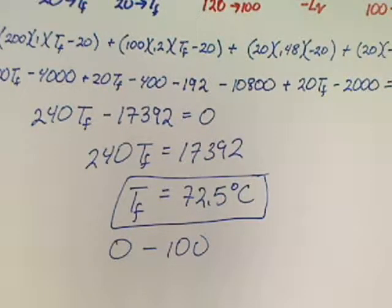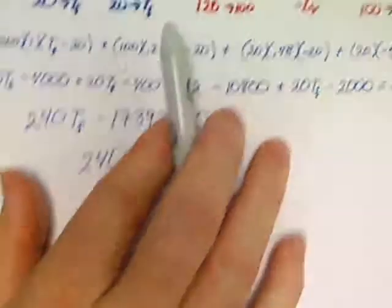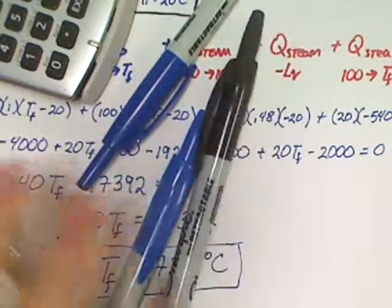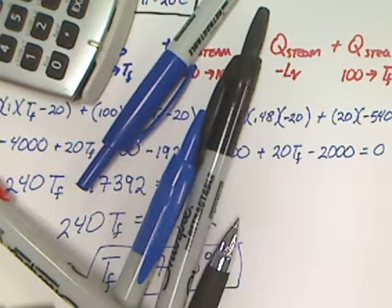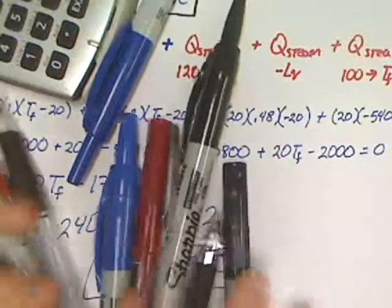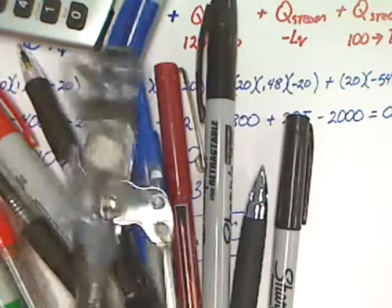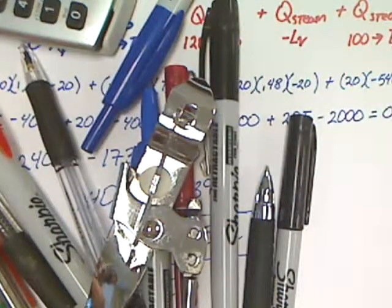If you can do this, you should be an MC Delta T monster. Look at all these markers — I've got markers and pens everywhere. I even have a can opener. I don't know why I have a can opener.